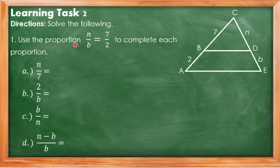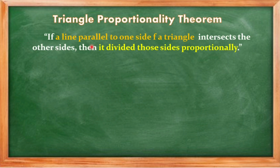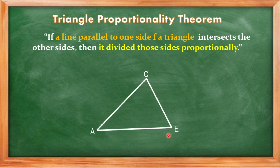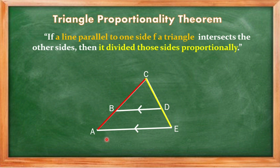Now let's have learning task number 2. Direction: solve the following. Before answering, let me discuss the Triangle Proportionality Theorem. It states that if a line parallel to one side of a triangle intersects the other two sides, then it divides those sides proportionally. For example, in triangle ACE, if segment BD is parallel to one side, it divides sides AC and CE proportionally, so the ratio of segment AB over segment BA equals the ratio of segment CD over segment DE.